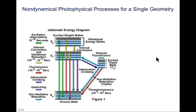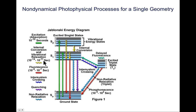This is a Jablonski diagram, which summarizes in one convenient diagram many of the physical processes just discussed. On the diagram we have a ground electronic state with varying vibrational states, a first excited singlet S1, a second excited singlet S2, and a first excited triplet T1 — differing from the singlet by a spin flip. The green up arrows are absorptions, occurring on a timescale of about 10⁻¹⁵ seconds. Internal conversion — relaxation down from excited electronic and vibrational states down to the lowest vibrational state of S1 — is also very fast: 10⁻¹⁴ to 10⁻¹¹ seconds.